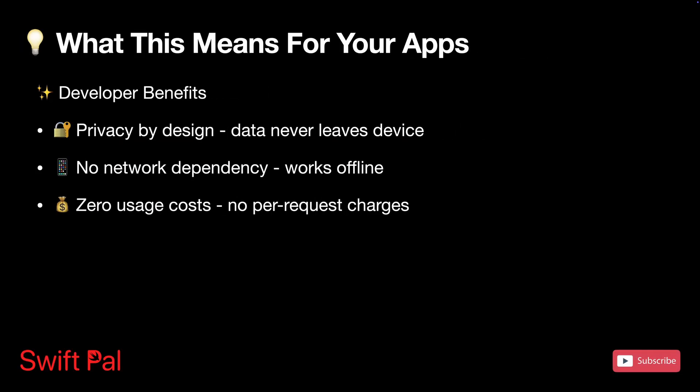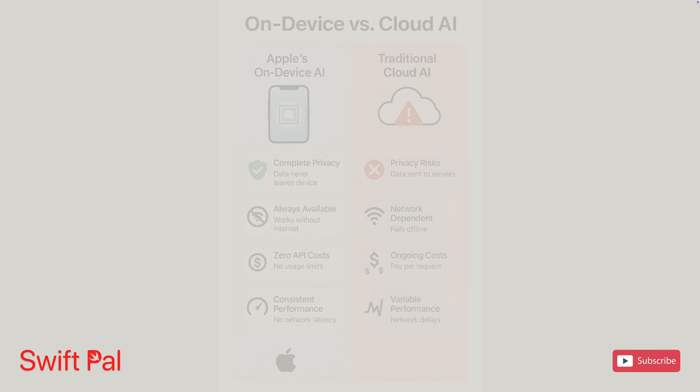While everyone else is racing to build cloud-based AI services with monthly subscription fees and data privacy concerns, Apple is going in the opposite direction — betting big on local, on-device intelligence. For developers, this approach has real advantages: privacy by design with user data never leaving the device, no network dependency so AI features work offline, zero usage cost since these APIs don't charge per request, consistent performance not dependent on server load, and no API key management. The trade-off is that you're working within Apple's ecosystem and model capabilities — you can't swap in the latest GPT model or fine-tune everything exactly how you want.